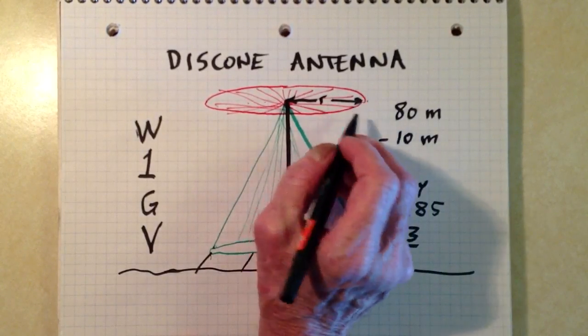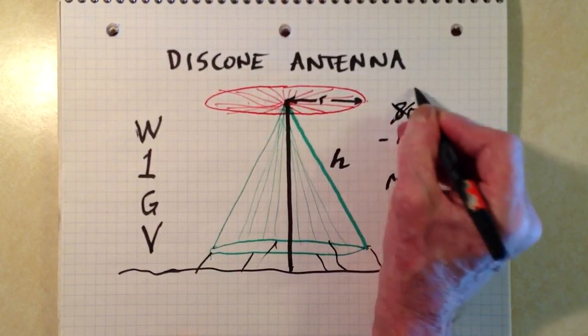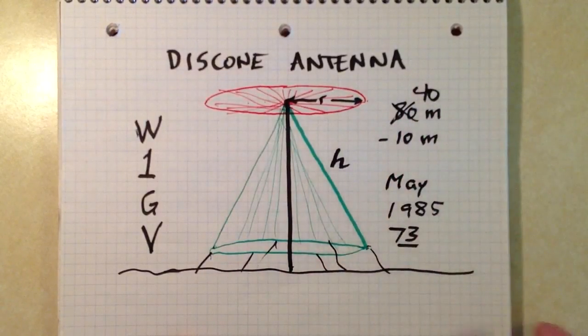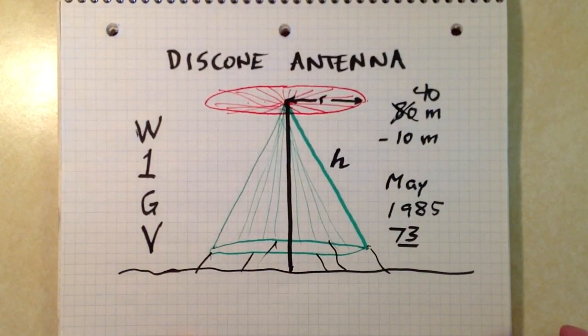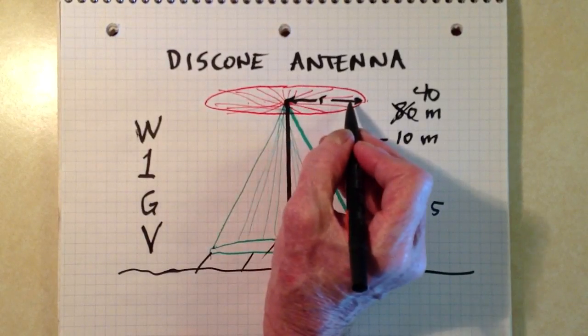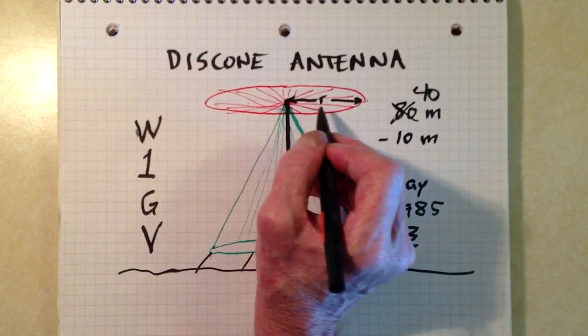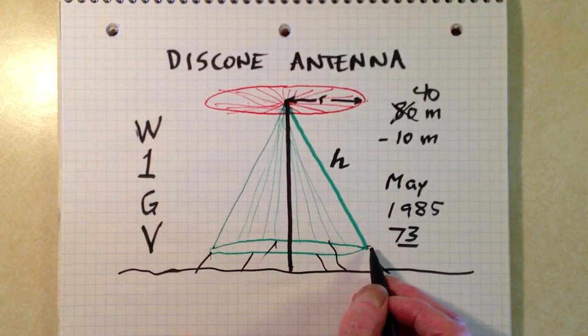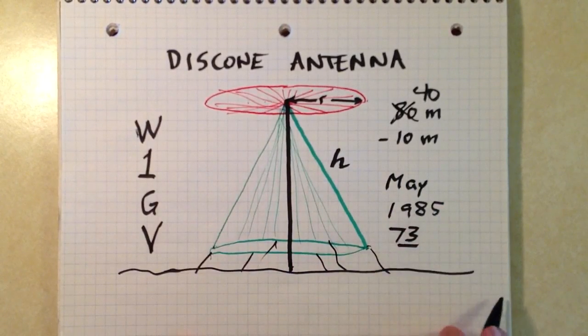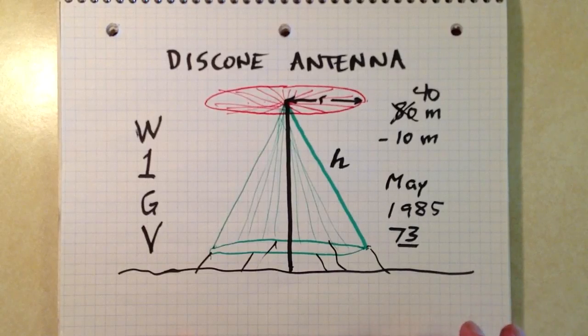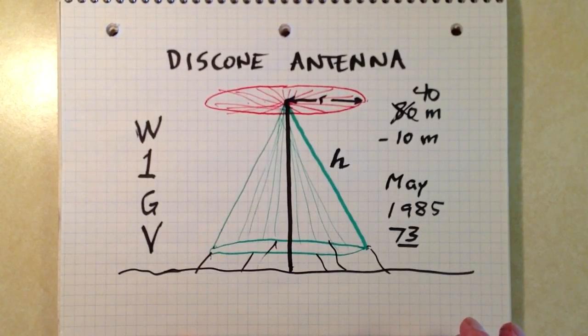If you want to design this thing for 40 meters and up, you'll have a little bit easier time mechanically. The radius of this disc needs to be 11 feet 5 inches, and the slant height 34 feet 3 inches, according to my article in May 1985, 73 Magazine.